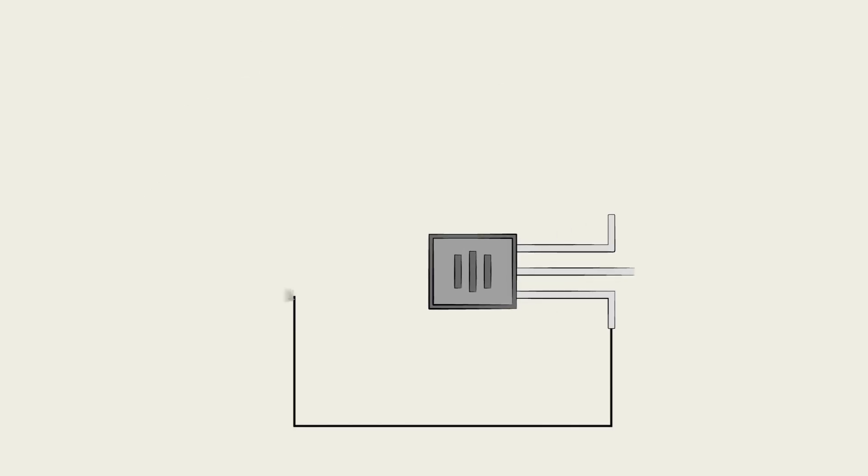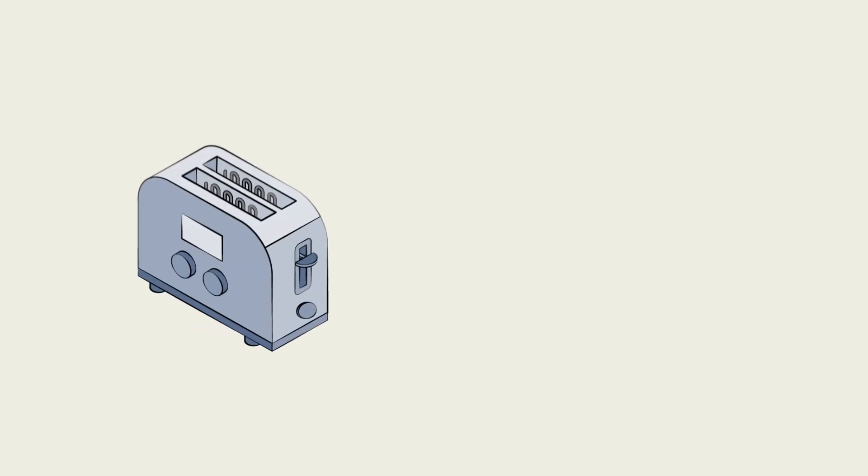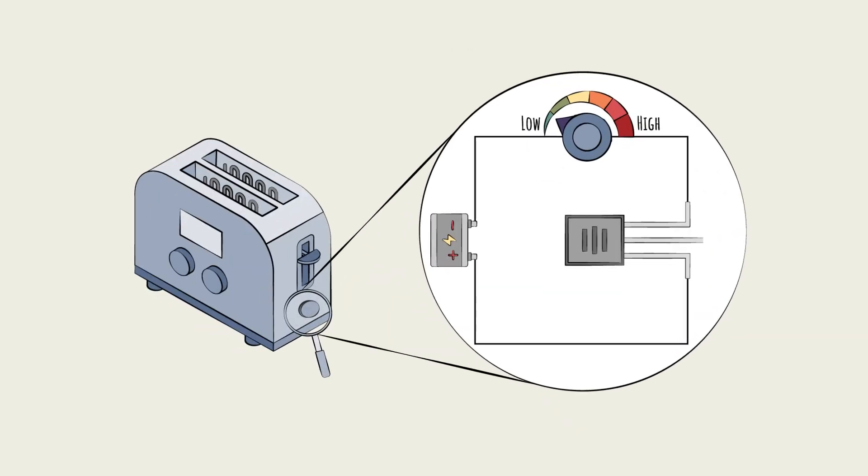Transistors, the first and most basic version of the so-called semiconductors, are like tiny switches. Using a small electrical current, you can flip them from one mode to another. With a transistor, a turned-on toaster can now have two different modes – high heat or low heat, for example – depending on which way the transistor is flipped.